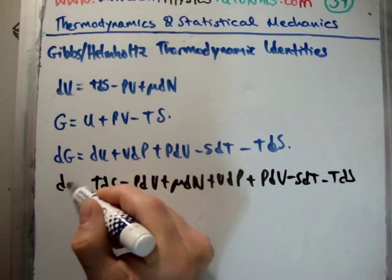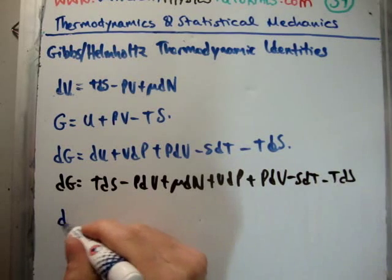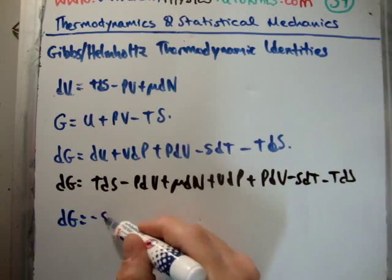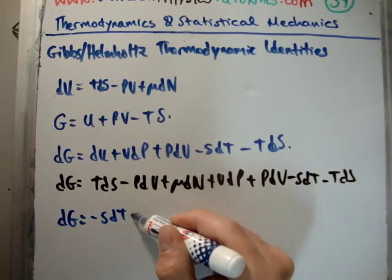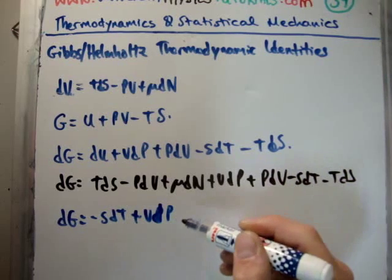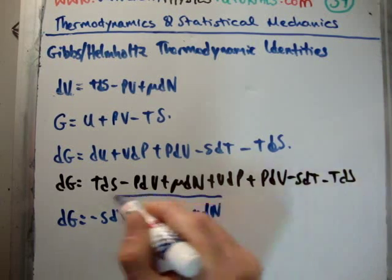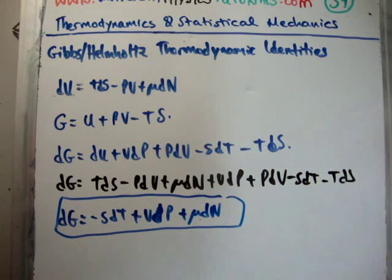And that's going to give us the infinitesimal change in the Gibbs free energy. And we put it all together saying that the infinitesimal change of the Gibbs free energy is minus SdT plus VdP plus μdN. Simple. Okay.